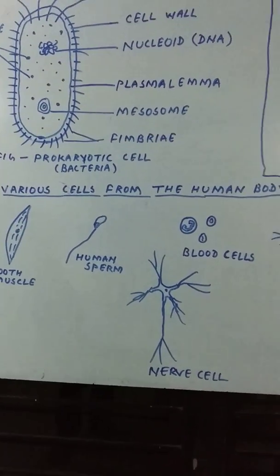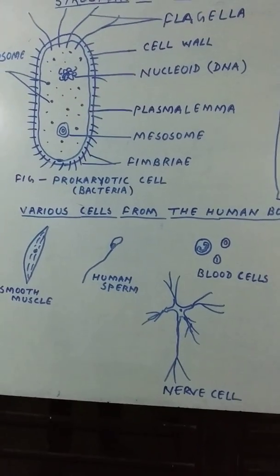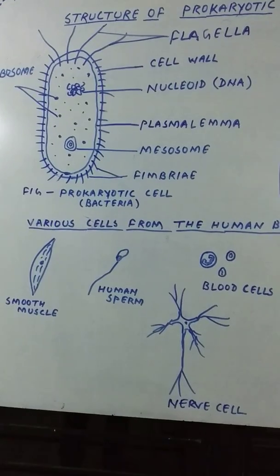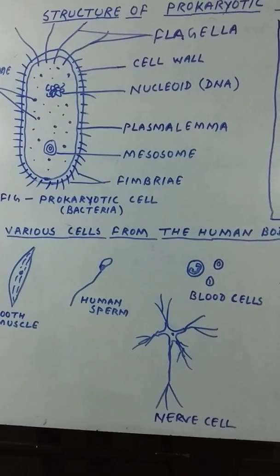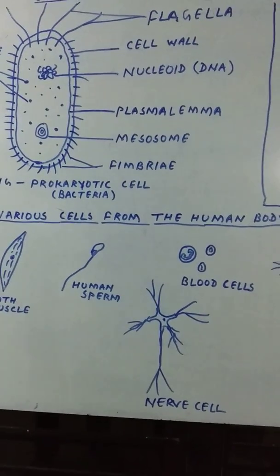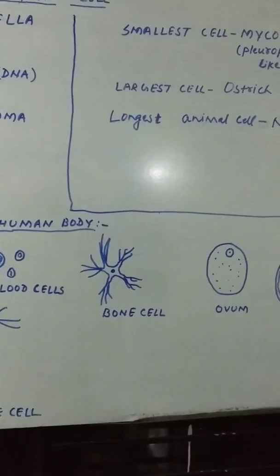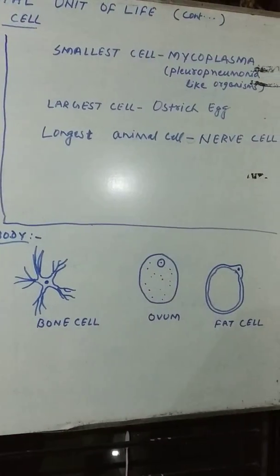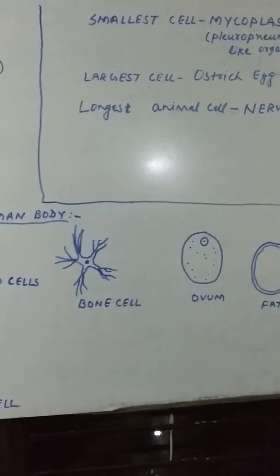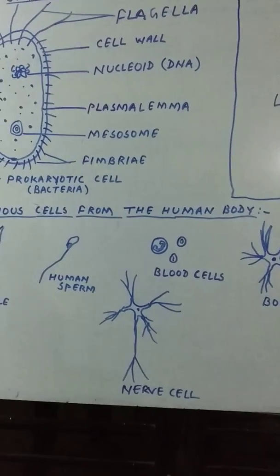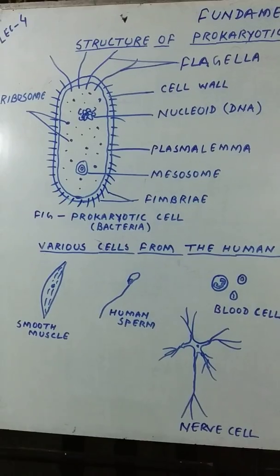We have discussed that the shape of the cell depends mainly on the function they perform. Some cells can be seen with the naked eye, for example eggs of reptiles and birds, and jute fiber. But a great majority of cells are too small to be seen with the naked eye and can be seen only through a microscope.